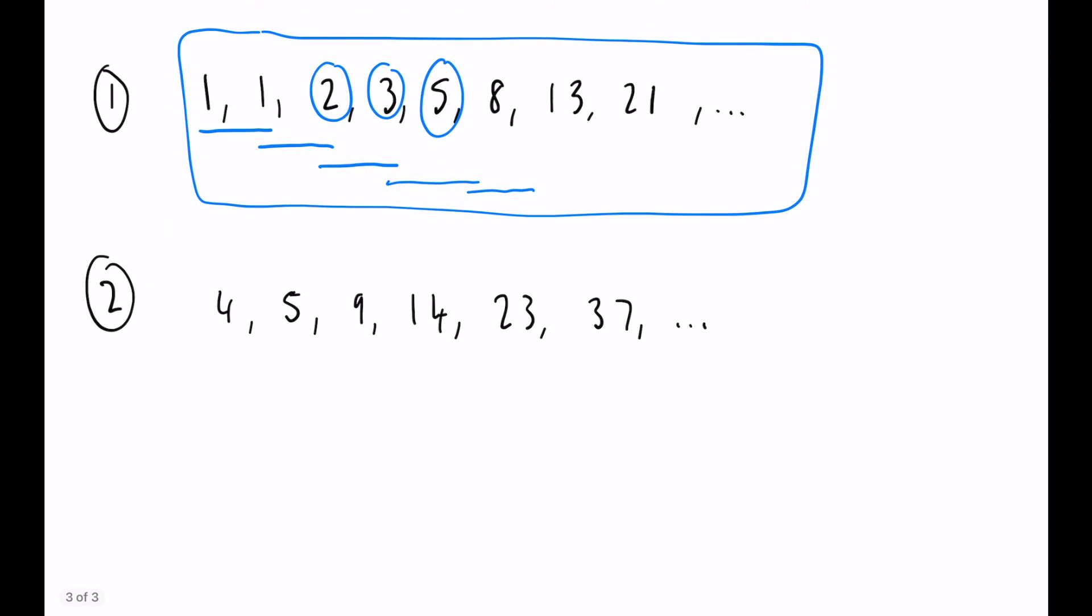However, you can also get other sorts of Fibonacci sequences which you can just make up on your own. If we have 4 and 5 at the start, the next number is going to be 9. 5 and 9 makes 14, 9 and 14 makes 23, and so on. You get the idea.